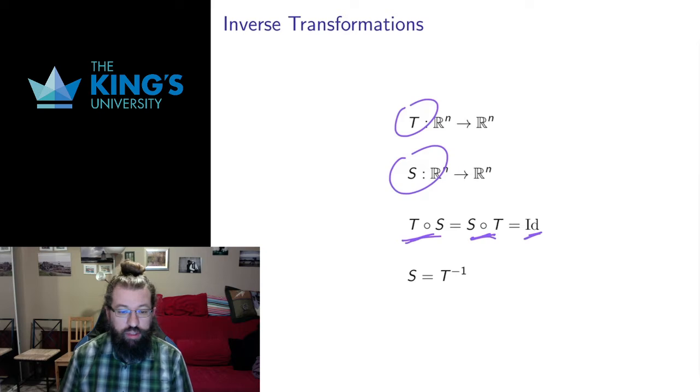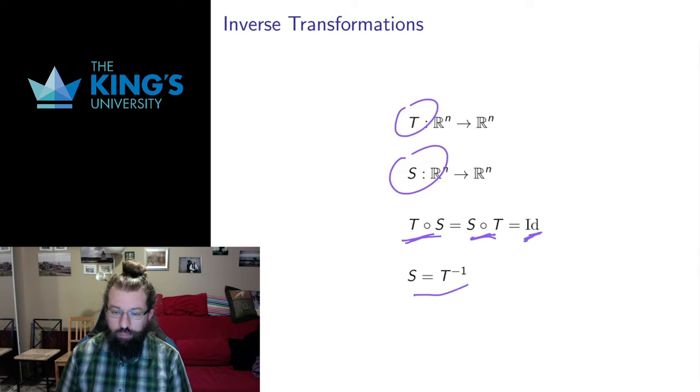The identity transformation is a transformation that leaves everything where it is. So if I do T and I do S, it's the same thing as leaving everything where it is. If I do S and then I do T afterwards, it's the same thing as leaving everything where it is. We call then S the inverse of T, and we write it as T to the negative one, like we did with functions f to the negative one in calculus for the notation for an inverse.